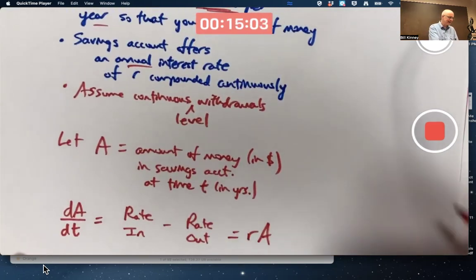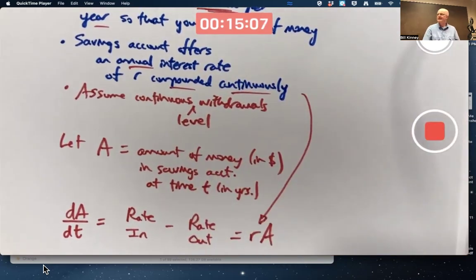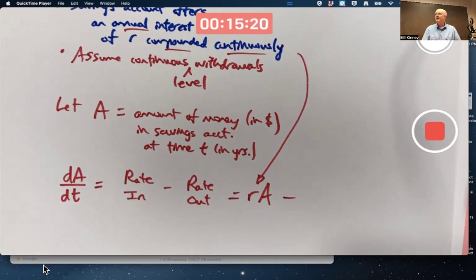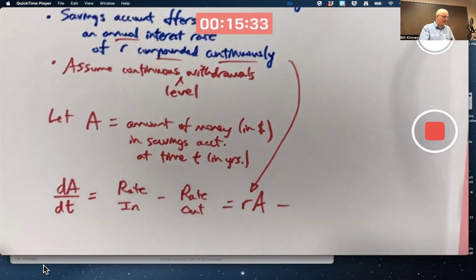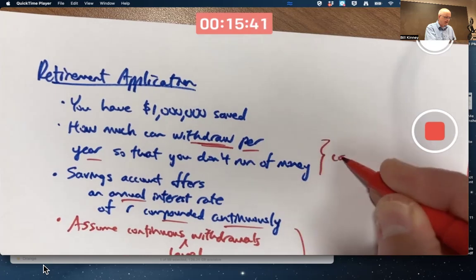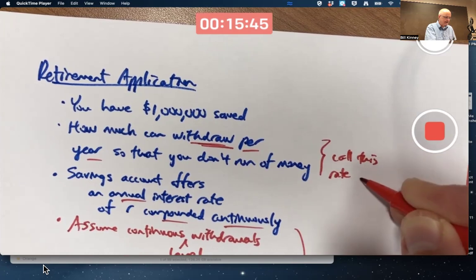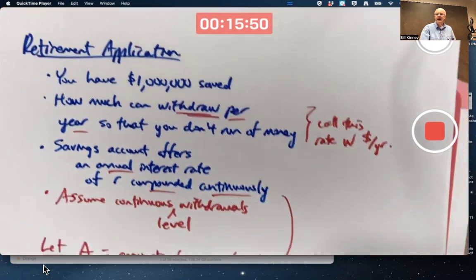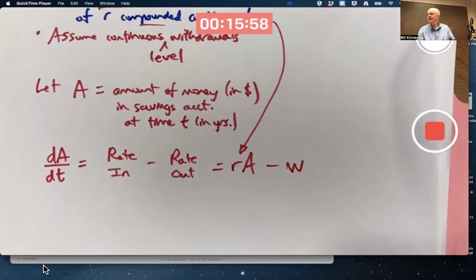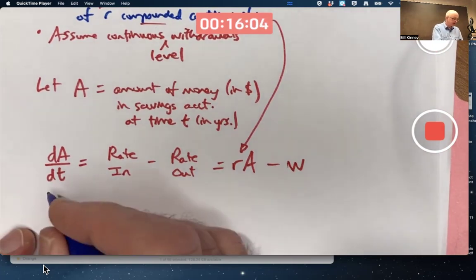If it is compounded continuously that does end up being what R is which is part of the reason why we like continuous compounding. What's the rate out? It's at a constant rate in dollars per year. Level constant rate for example, it could be $100,000 per year which again converted to one cent every three seconds or so. But the units are dollars per year. I haven't said what it is. Let's give it a parameter name. Call this rate W for withdrawal dollars per year. If W is the withdrawal rate in dollars per year we would subtract W. The units do work out right. The units for dA/dt would be dollars per year.